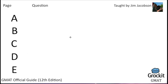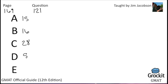Number 121, still page 169. Answer choices: 15, 16, 28, 56, and 64. There are eight teams in a certain league, and each team plays each of the other teams exactly once. If each game is played by two teams, what is the total number of games played?